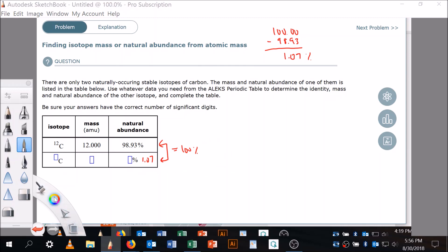We know that the overall average mass of carbon is 12.0107 amu, and we know that the mass of carbon-12 is 12 even.